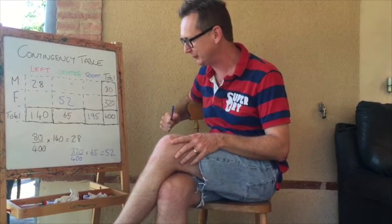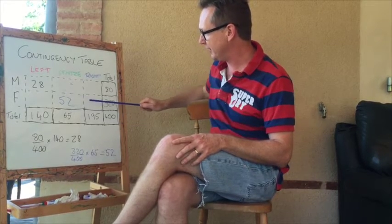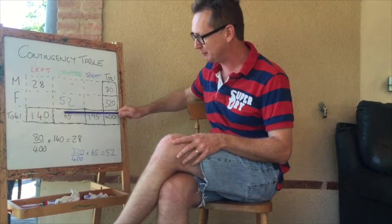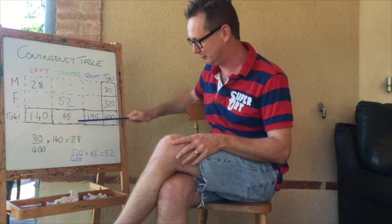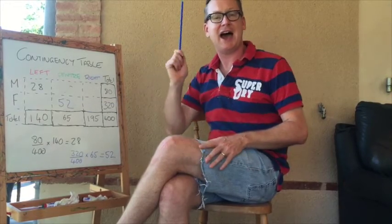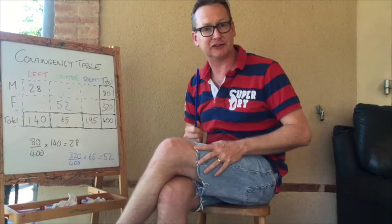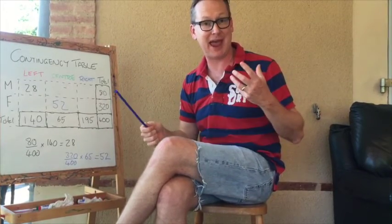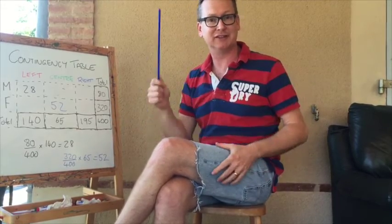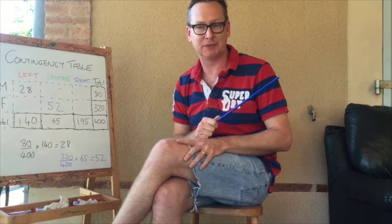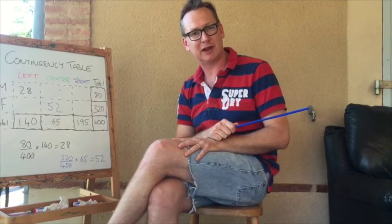So I know I've got 28 males in that cell. And equally, since 320 out of 400 of my population are female, I would expect that fraction of the 65 centrists to be female: 320/400 times 65 gives 52 females. That is how we deal with this notion of an expected frequency — the assumption that there is no relationship. We calculate the expected frequencies, and the next step is comparing those with what actually happened to conclude whether or not there's a relationship between gender and political persuasion. That is the essence of a chi-squared test of independence.